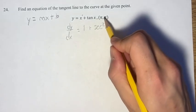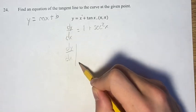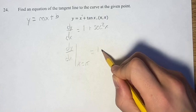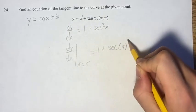So, we're asked to find the value of this at pi, so dy dx at x equals pi is equal to 1 plus secant of pi squared.